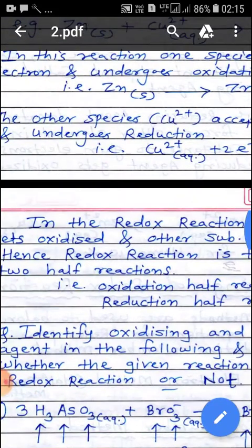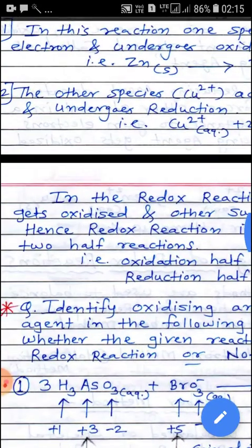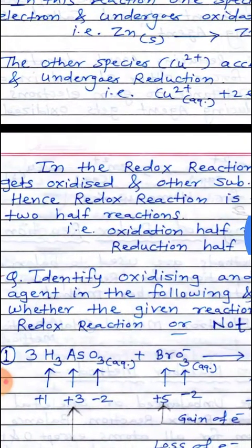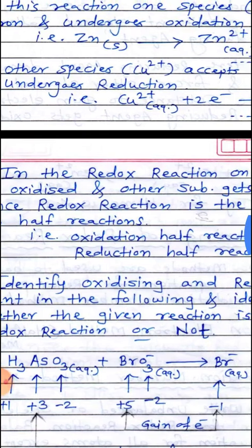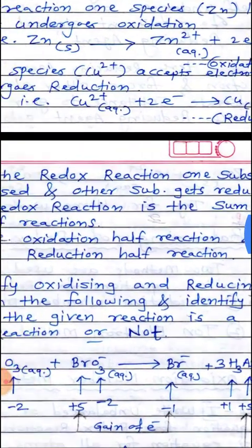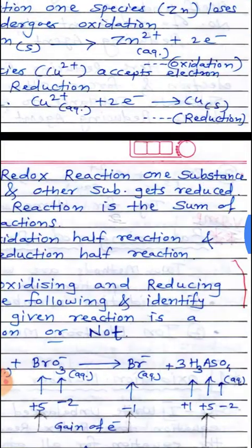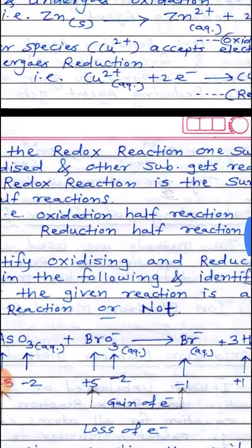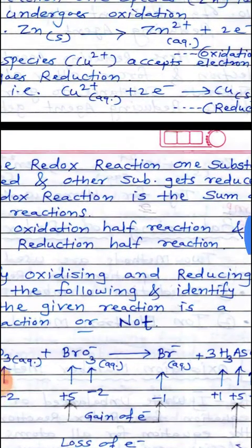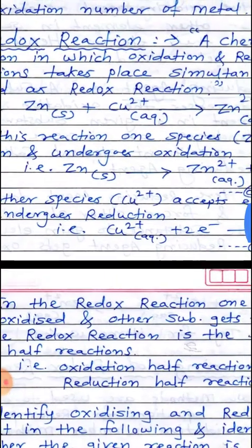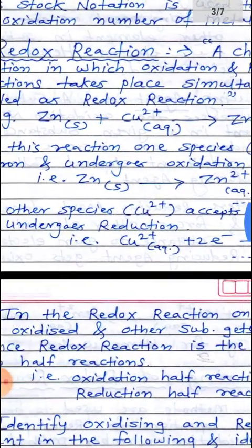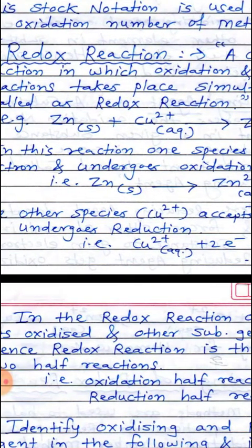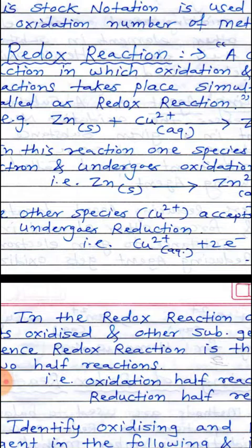Here we have two reactions — oxidation and reduction — in this redox reaction. One substance gets oxidized and the other gets reduced. Hence, the redox reaction is the sum of two half reactions: the oxidation half reaction and the reduction half reaction. Zinc loses electrons, which means Zinc undergoes oxidation and is therefore the reducing agent.